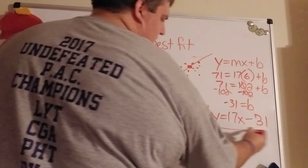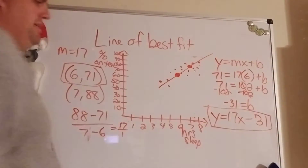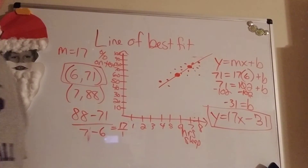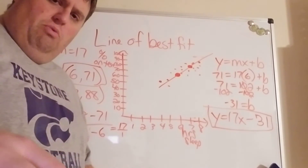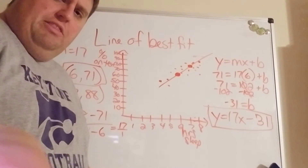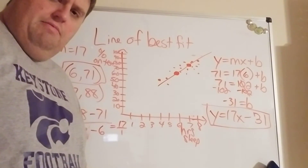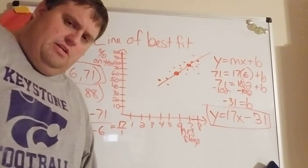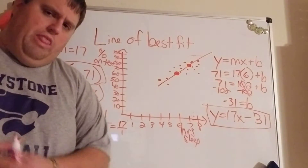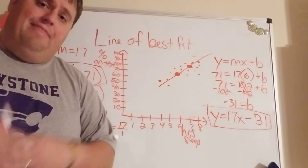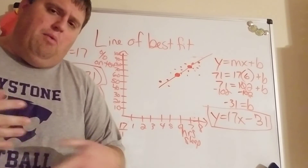I found my slope and my y-intercept — those are the two things I need. So the equation of this line of best fit is y = 17x minus 31. This is the equation of the line we drew — not just the drawn line, but the written equation of that line.